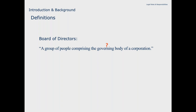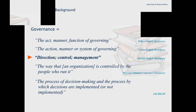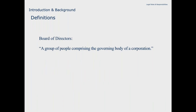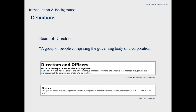Board of directors: a group of people comprising the governing body of the corporation. What do we mean by governing? The definition I particularly like talks about direction, control, and management. That's not just my view — it's actually in the law. If you look at either act, you will see that 'the directors shall manage or supervise the management of the activities and affairs of the corporation,' says the CNCA. You'll find a similar statement in the Ontario Corporations Act. As a board, the directors are responsible for the control, direction and management of the organisation.